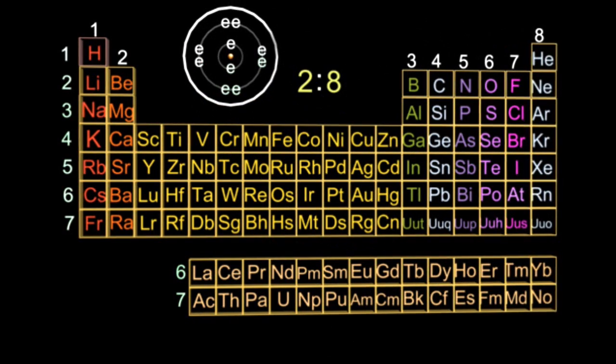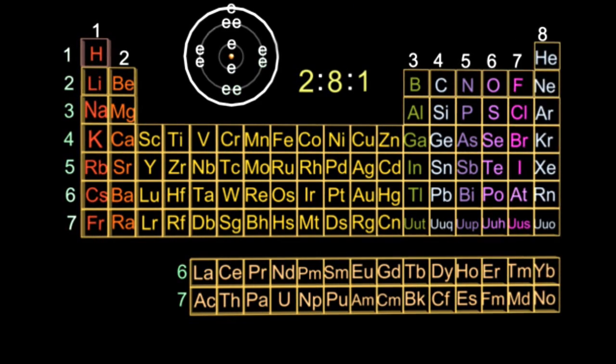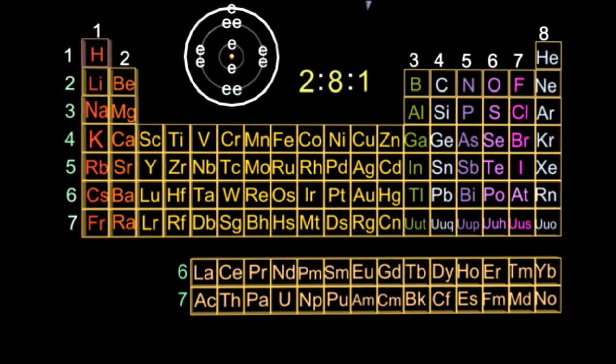That ring is now full. The second ring, the second electron shell is full with eight. And so sodium has one more electron to put in, and that's two, eight, one.